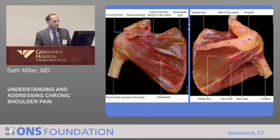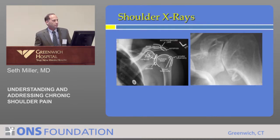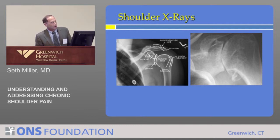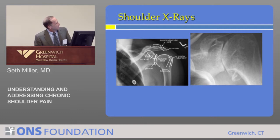Dr. Badasti will talk a little more about the rotator cuff. Patients with arthritis typically have abnormal x-rays, which is the first thing we get in the office. Normally there's a reasonable space between the ball and the socket — the humeral head and the glenoid. But when someone develops arthritis and loses cartilage, the space narrows, and patients form spurs in reaction to the increased stress on the bone because there's no more buffer.